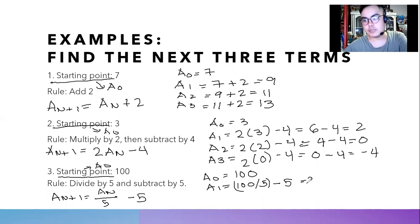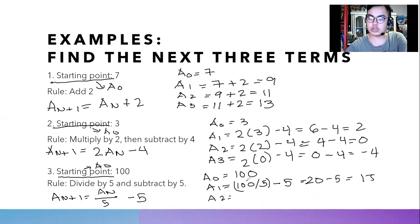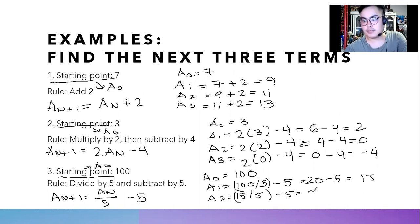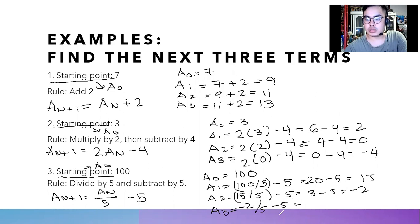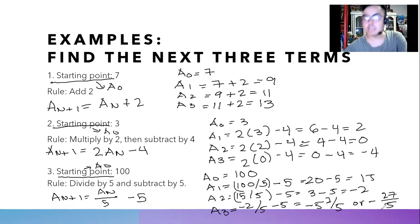100 divided by five is 20, then subtract five, which gives 15. Then we change the current term to 15. We divide 15 by five, then subtract five: 15 divided by five is three, then minus five is negative two. For a sub three, we use the current term negative two, divide it by five, then subtract five. Since we have fractions, we add them because both are negative: negative two over five minus five, which is negative 27 over five. Thank you.